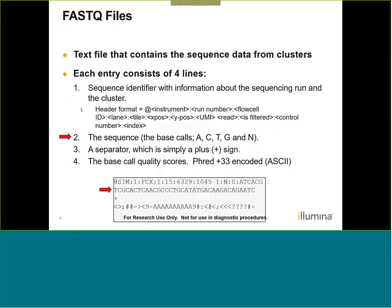The second line is going to be the actual sequence that the sequencer reads — the specific base calls, your A's, C's, T's, and G's, as well as N's in some specific cases. It's always separated by a plus sign, and then the fourth line is going to contain your base call quality scores. These are ASCII symbols in a Phred+33 encoded format, so each symbol corresponds to a specific quality score. For example, the symbol 'A' corresponds to a Phred quality score of 32.